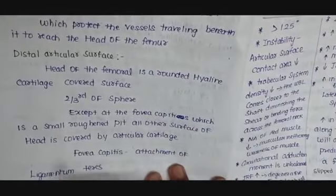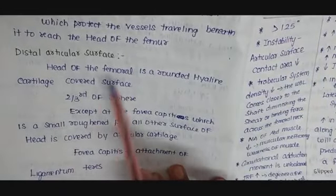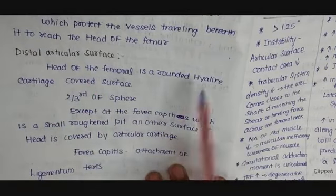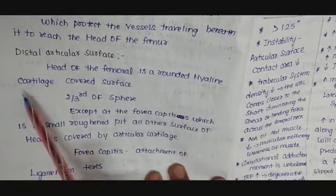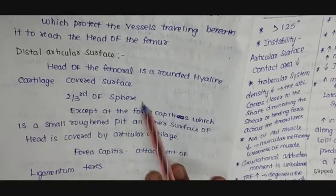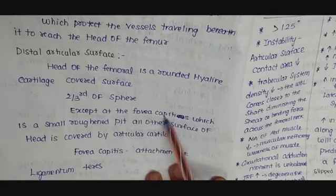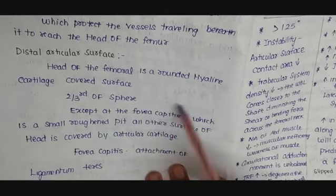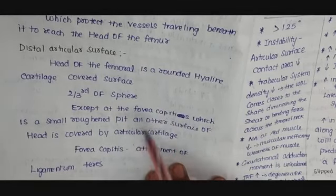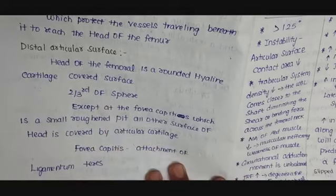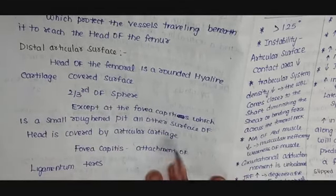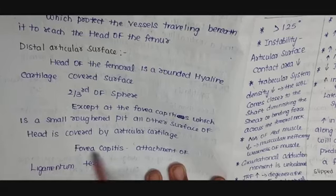Regarding the distal articular surface: the femoral head forms the distal articular surface and is covered by hyaline articular cartilage. It is more or less two-thirds of a sphere. Except for the fovea capitis, which is situated at the center of the femoral head, all other areas are covered by hyaline articular cartilage. The fovea capitis provides attachment for the ligamentum teres, which will be discussed later.